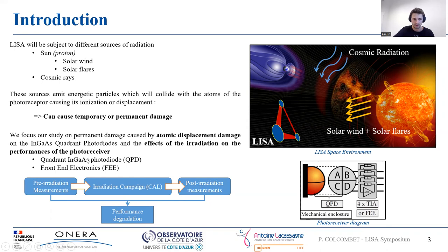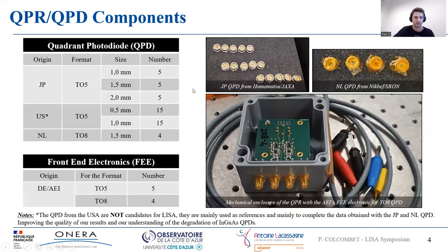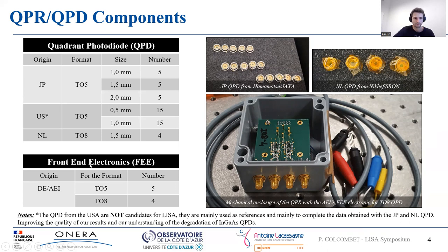The QPR is composed of two parts: the quadrant InGaAs photodiode and the front-end electronics. Here is a presentation of the different components. We have different QPDs — one is coming from Japan, made by Hamamatsu and bought by JAXA. The second one is coming from the Netherlands, made by Nikhef. These are the two candidates for the future LISA QPD. We also have QPDs used here as a reference, mainly to complete our data obtained with the Japanese and Netherlands QPDs, and to improve our understanding of the degradation of InGaAs QPDs. The front-end electronics are made in Germany by the Albert Einstein Institute.